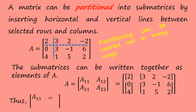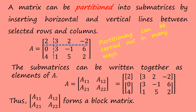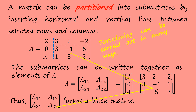This matrix is called a block matrix, where A11 is a 1 by 1 matrix, A12 is a 1 by 1 matrix, A21 is a 2 by 1 matrix, and A22 is a 2 by 3 matrix.